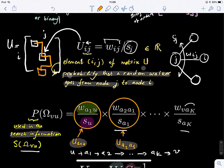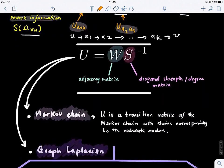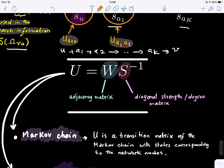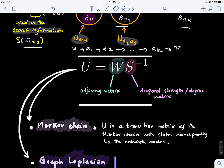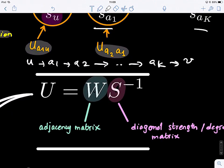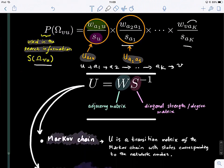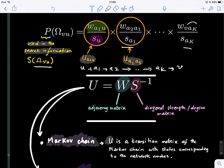This is another way of looking at the probability of a random walker going from one starting point to another. There are many concepts built on this matrix U, so you really need to remember it — it's used in different theories. For example, if you know the Markov chain, U is actually what we call the transition matrix of the Markov chain, with states corresponding to the network or graph nodes.